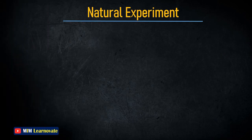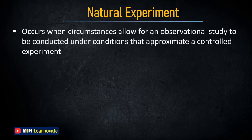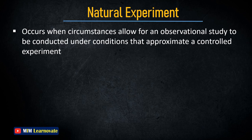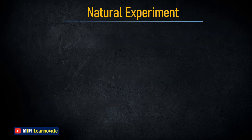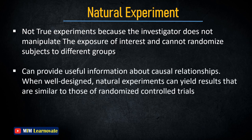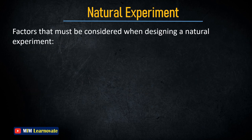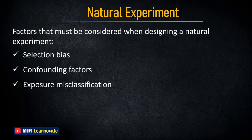Natural Experiment: A natural experiment is a quasi-experiment that occurs when circumstances allow for an observational study to be conducted under conditions that approximate a controlled experiment. They are often used to study situations where it would be unethical or impractical to conduct a controlled experiment, such as investigating long-term effects of exposure to a naturally occurring toxin. Natural experiments are not true experiments because the investigator does not manipulate the exposure and cannot randomize subjects. However, when well-designed, they can yield results similar to randomized controlled trials. Key considerations include selection bias, confounding factors, and exposure misclassification.